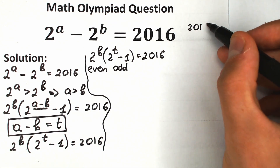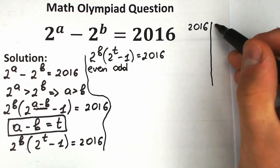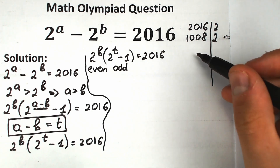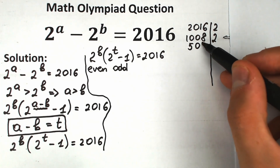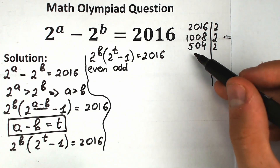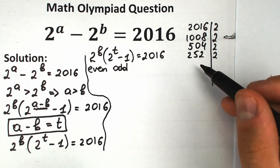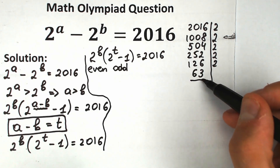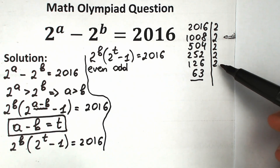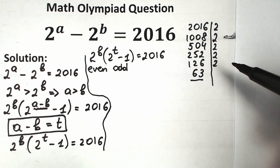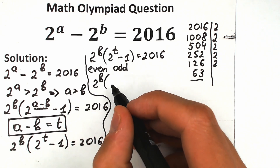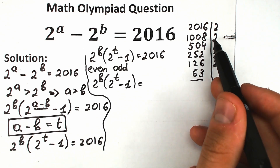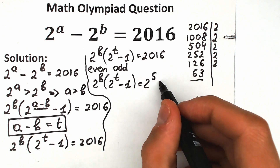Let's factor 2016. Dividing by 2 repeatedly: 2016 → 1008 → 504 → 252 → 126 → 63. So we can write 2016 as 63 times 2 to the power 5. Our equation becomes 2 to the power B times (2 to the power T minus 1) equals 2 to the power 5 times 63.